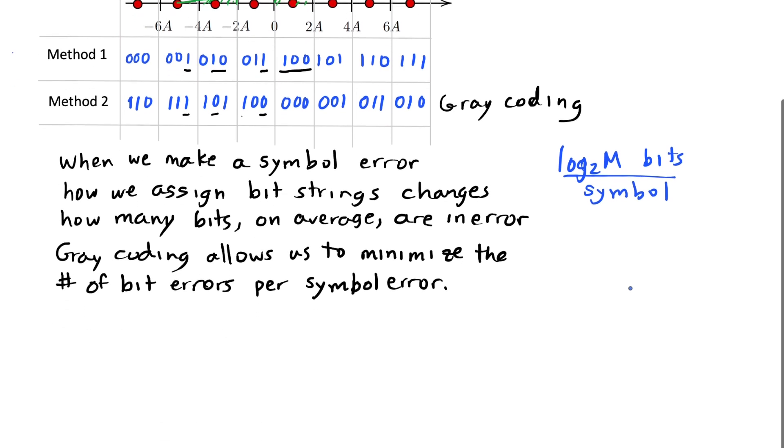But with gray coding, I'm going to make, on average, approximately one error. And I have multiple bits in each symbol, log base 2 of m bits per symbol. And on average, I'm only going to make one of those bits have an error. My bit error is going to be 1 over log base 2 of m times the probability of symbol error.